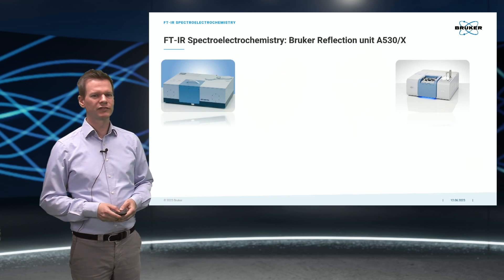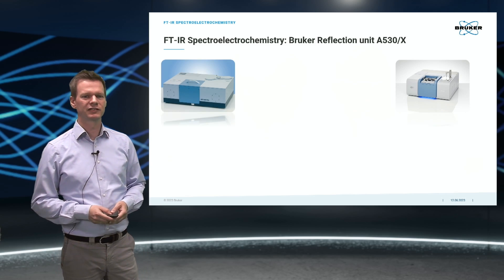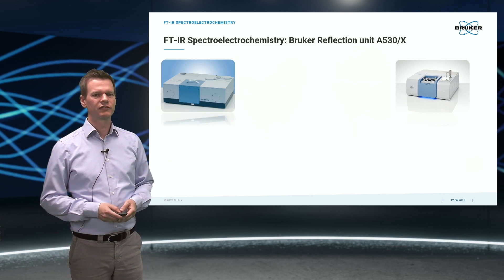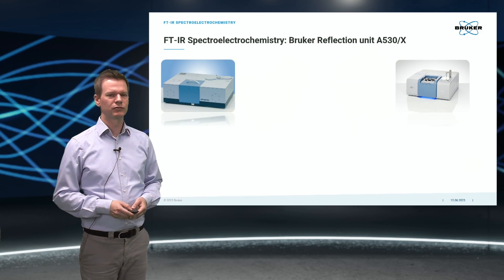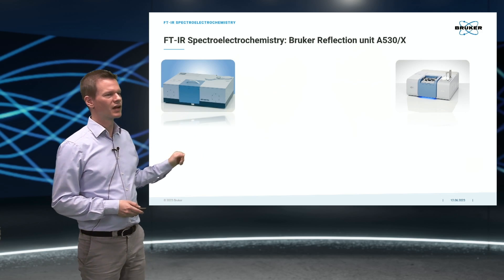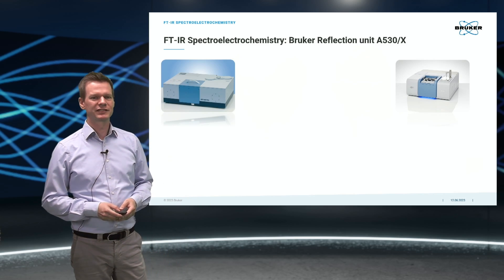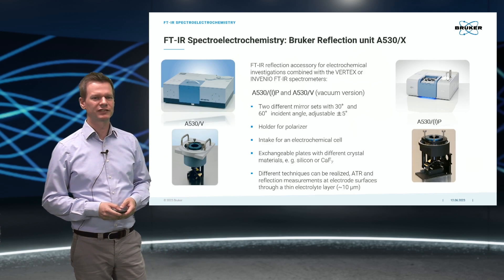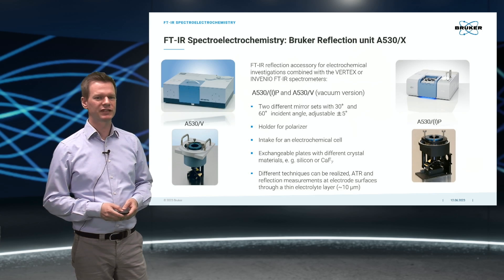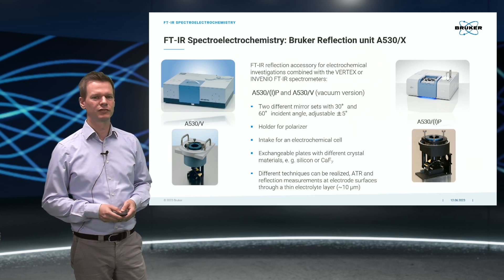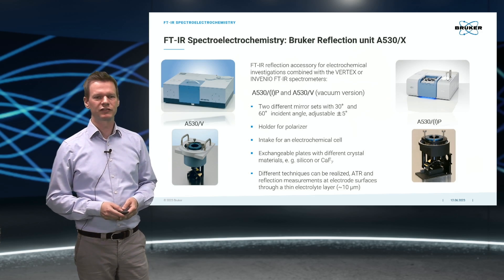At Bruker, we offer for the Vertex and Invenio FTIR spectrometer series a reflection unit for electrochemical experiments. There is one version for the vacuum system and one version for the purge systems. An electrochemical cell can be simply inserted into this reflection unit, then the beam is guided via mirrors at 30 or 60 degrees of incidence to a crystal window plate. This crystal window plate can be exchanged easily, realizing different measurement modes. Additionally, the use of polarized IR light is possible.